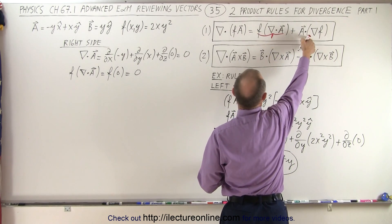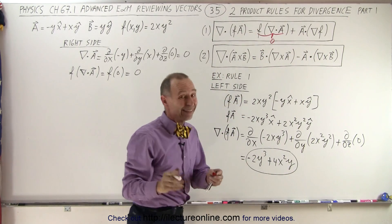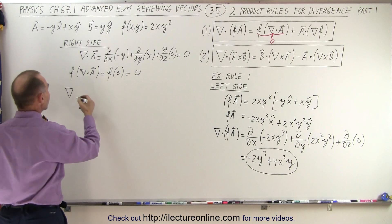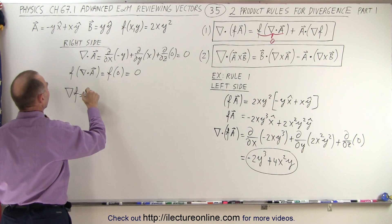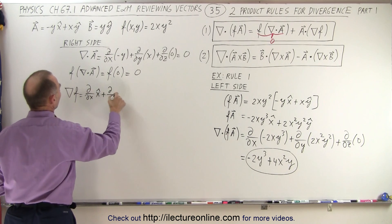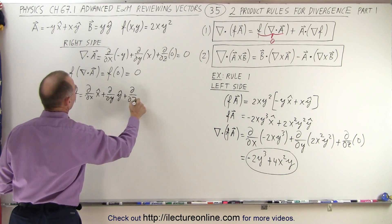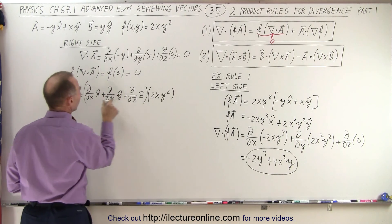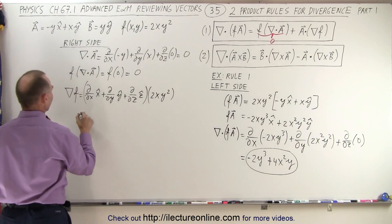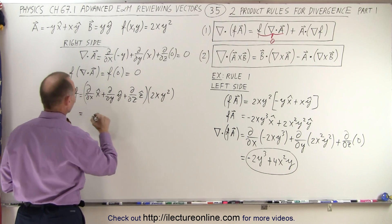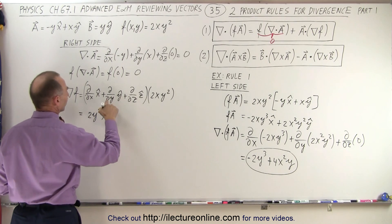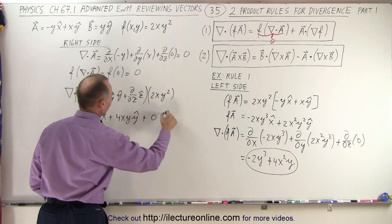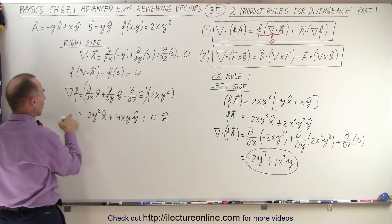That doesn't bode well unless the second term is not equal to 0. So now I'm going to take the gradient of f. This is equal to the partial with respect to x times x-hat, plus the partial with respect to y times y-hat, plus the partial with respect to z times z-hat, all operating on the function 2xy². Each of those terms operates on that, giving us a vector: 2y² in the x direction, plus 4xy in the y direction, plus 0 in the z direction. That is the gradient of the scalar function.